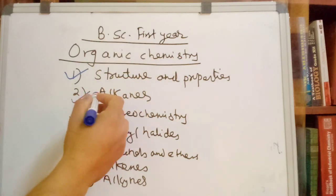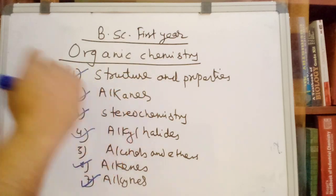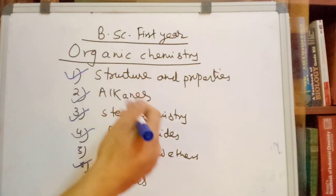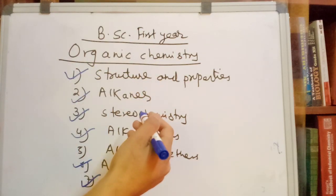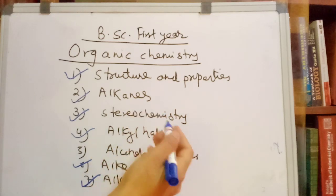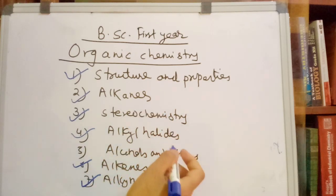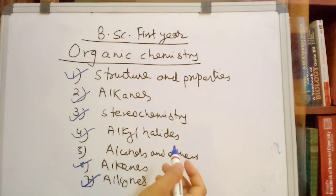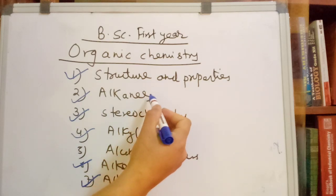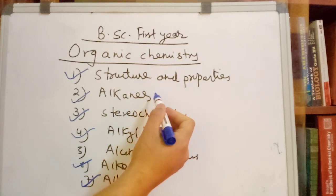In the Alkane chapter, this is the BSc procedure. This is the mechanism for the reaction. The Alkane chapter covers the free radical reaction mechanism.